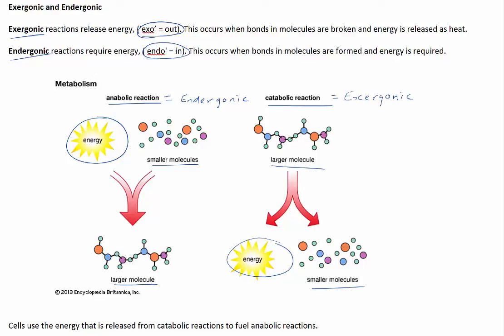In summary, organisms rely on biochemical processes to live. These processes occur in a series of steps and generally have inputs and outputs. A set of biochemical reactions that occur in a cell is called cellular metabolism. Enzymes are responsible for controlling the rate, type, and duration of biochemical processes. Biochemical processes that break down complex molecules are catabolic reactions, while those that synthesise complex molecules from simple ones are anabolic reactions. Exergonic reactions release energy when bonds are broken, and endergonic reactions require energy when bonds are formed.